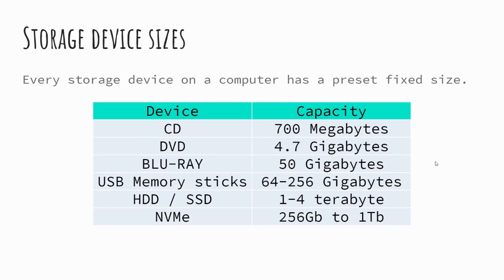Here are some typical storage devices and their capacity. A CD is typically 700 megabytes; a DVD is 4.7 gigabytes (or 4700 megabytes); Blu-ray for HD 1080p full-quality films is 50 gigabytes. USB memory sticks are typically 64 to 256 gigabytes. Hard disk drives or solid state drives typically range between one and four terabytes, and NVMe solid state storage between 256 gigabytes and one terabyte.